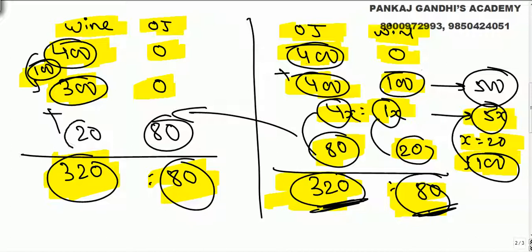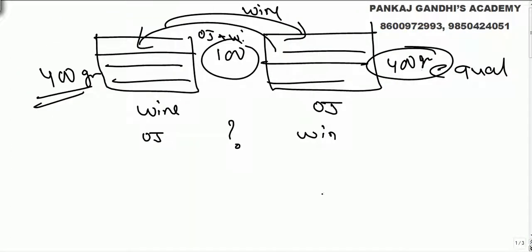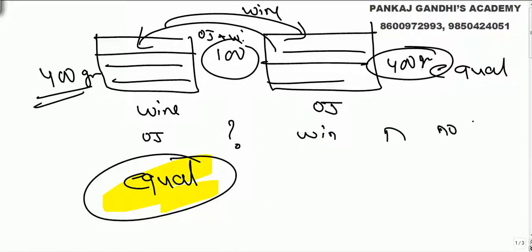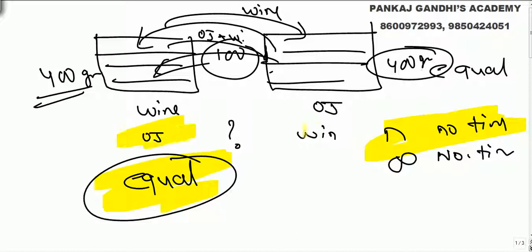So at the end, at the end, this is always going to be equal. Mug up the answer: even if we do this process n number of times, even if we do this taken out, replace, taken out, replace, taken out, even if we do n number of times or even if infinite number of times, at the end it will always be equal. Orange juice here and wine here, it will always be equal.